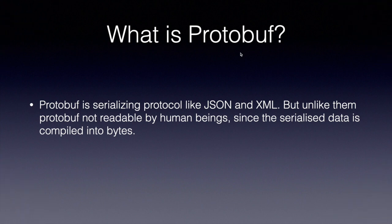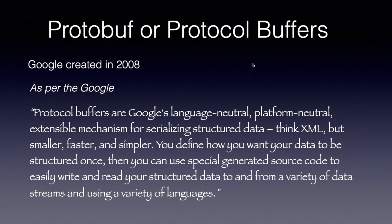Protobuf addresses all these points by taking a different approach. Protobuf is a serializing protocol like JSON and XML, but unlike them, protobuf is not human-readable since the serialized data is compiled into bytes. Protobuf was invented by Google in 2008 and has been used heavily in their backend services. As per Google's documentation: protocol buffers are Google's language-neutral, platform-neutral, extensible mechanism for serializing structured data — but smaller, faster, and simpler. You define how you want your data to be structured once, then use specially generated source code to read and write your structured data across a variety of languages and data streams.